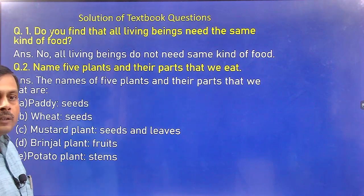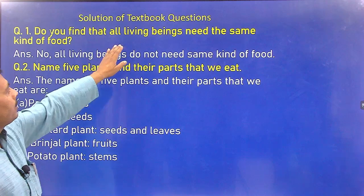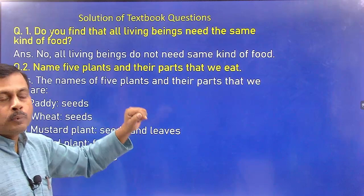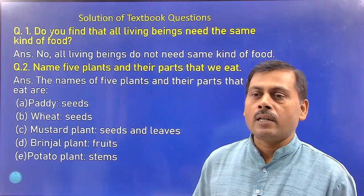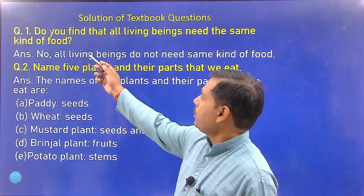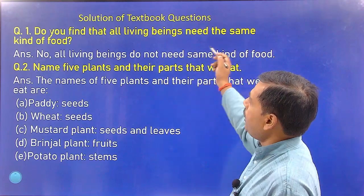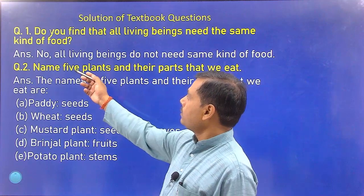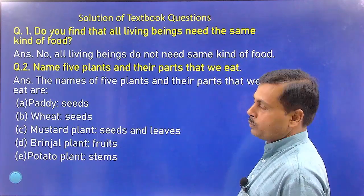The first question: Do you find that all living beings need the same kind of food? After studying chapter number one, what do you find? The answer is no — all living beings do not need the same kinds of food.